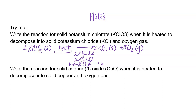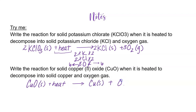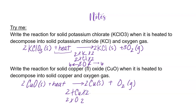Another example: write the reaction for solid copper(II) oxide, CuO(s), heated to decompose into copper solid and oxygen gas. Remember oxygen gas is a diatomic element, O2. Check if it's balanced — it is not. Write a 2 in front of CuO to balance oxygen, and that changes copper, so put a 2 in front of Cu as well. Now it is balanced: 2CuO(s) → 2Cu(s) + O2(g).